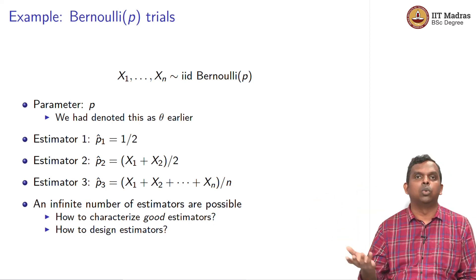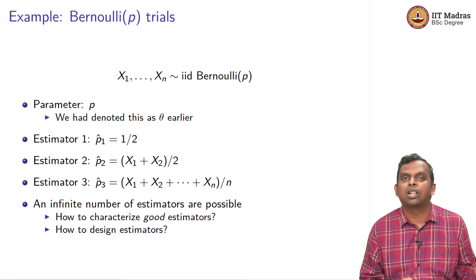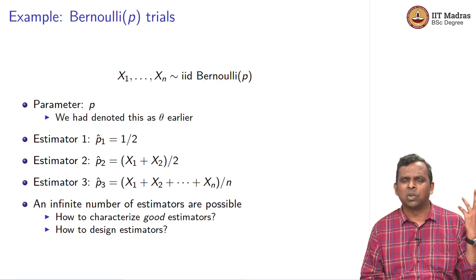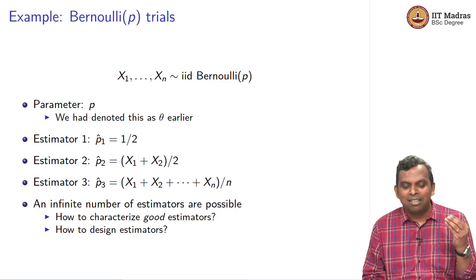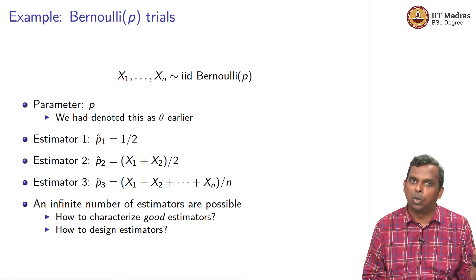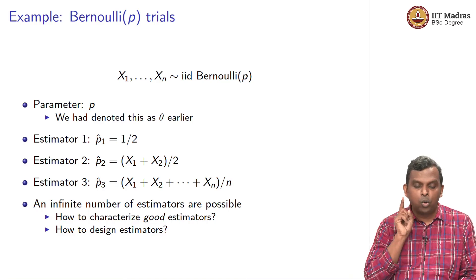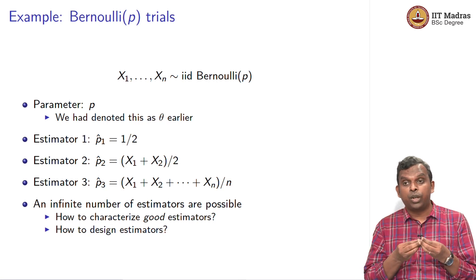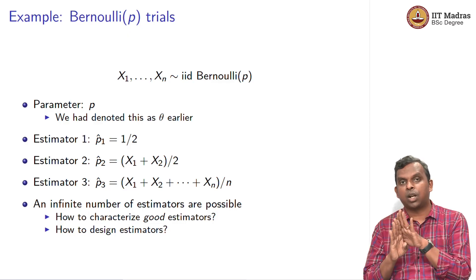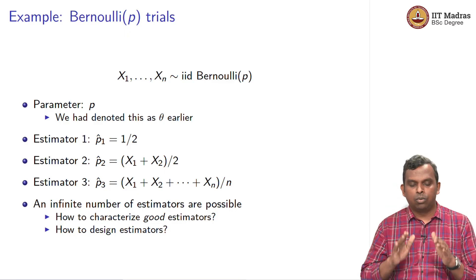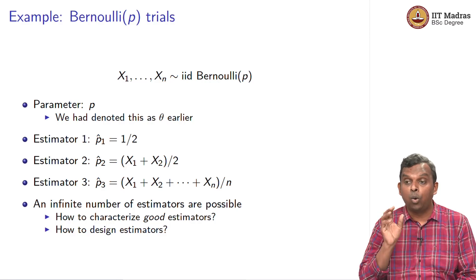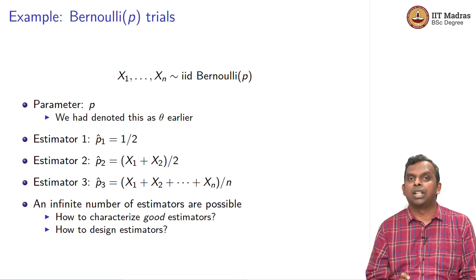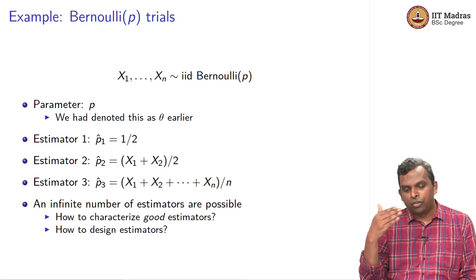An infinite number of estimators are possible. I could say 2x1 minus x2 — that is a valid estimator. Or x1 plus 2x2 plus 3x3 divided by 6 — any function you come up with is a valid estimator. Validity does not mean it is good. To be a good estimator, we have to think about how to characterize goodness. We know the estimator is going to have a distribution, and we have to characterize whether the distribution is around the real theta. How to write that down clearly, mathematically — how to develop good metrics and how to design estimators which give good values for those metrics — that will be the topic of the next few lectures. Thank you very much.